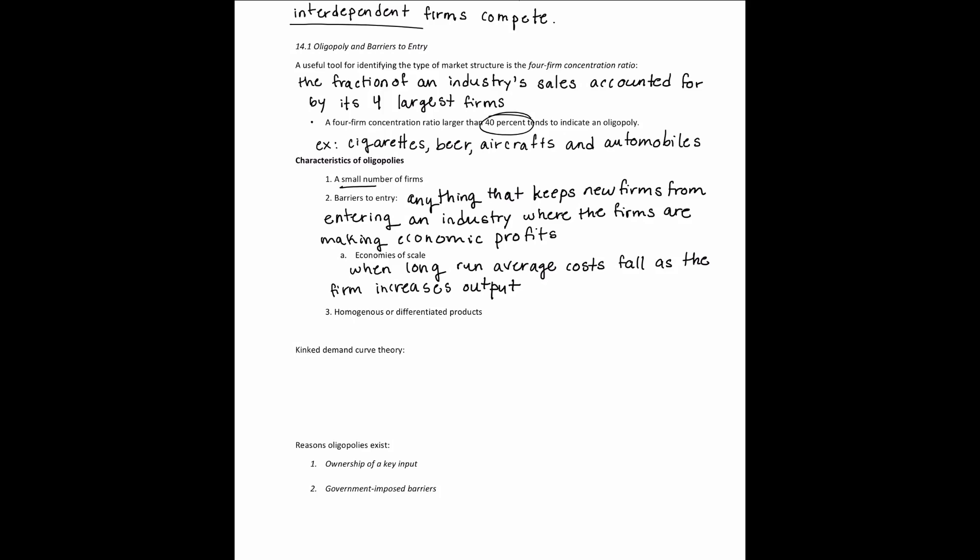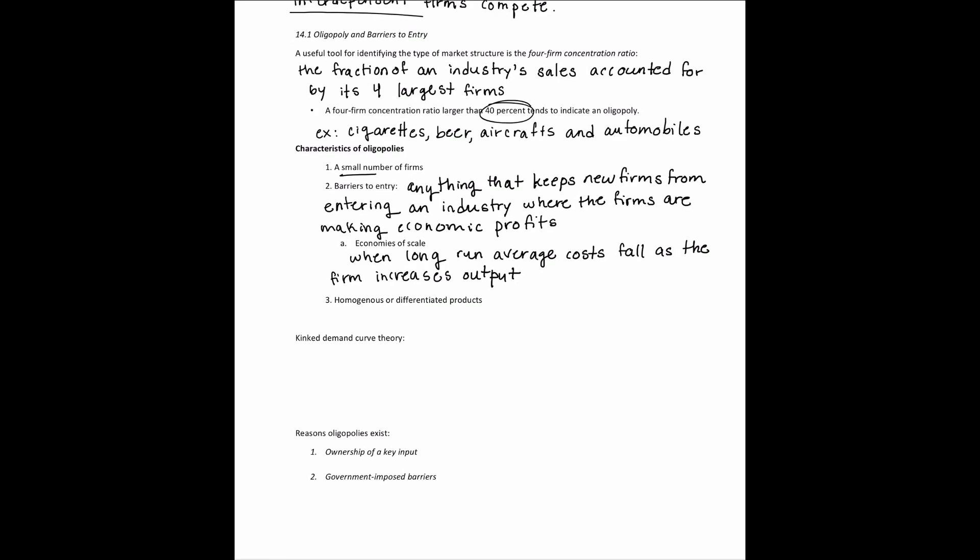The last characteristic to discuss is homogeneous or differentiated products. Perfectly competitive firms produce homogeneous products; monopolistically competitive firms produce differentiated products through branding and advertising. But with an oligopoly, you can have either. For example, the chocolate industry in the US — mainly controlled by Hershey and Nestlé — produces differentiated products, while OPEC, an oil cartel, produces a homogeneous product: oil.